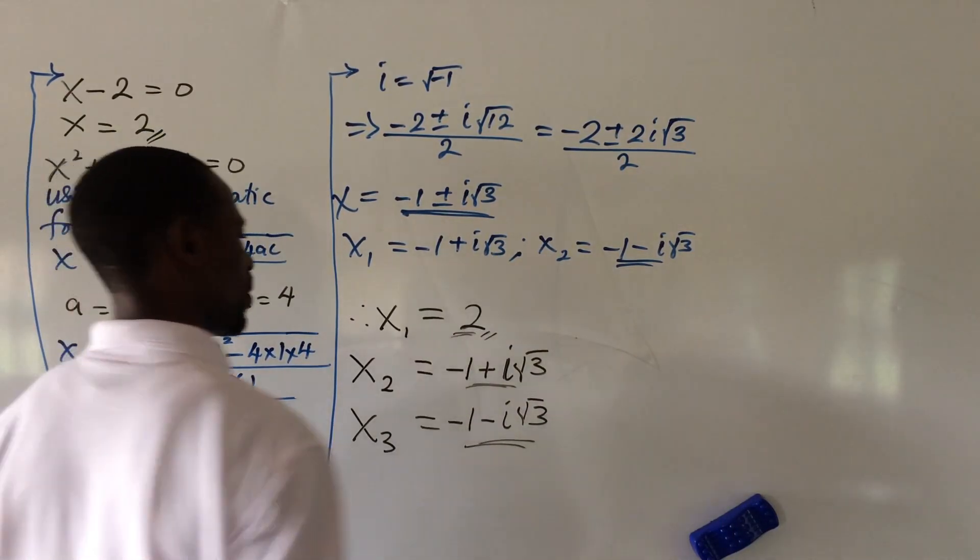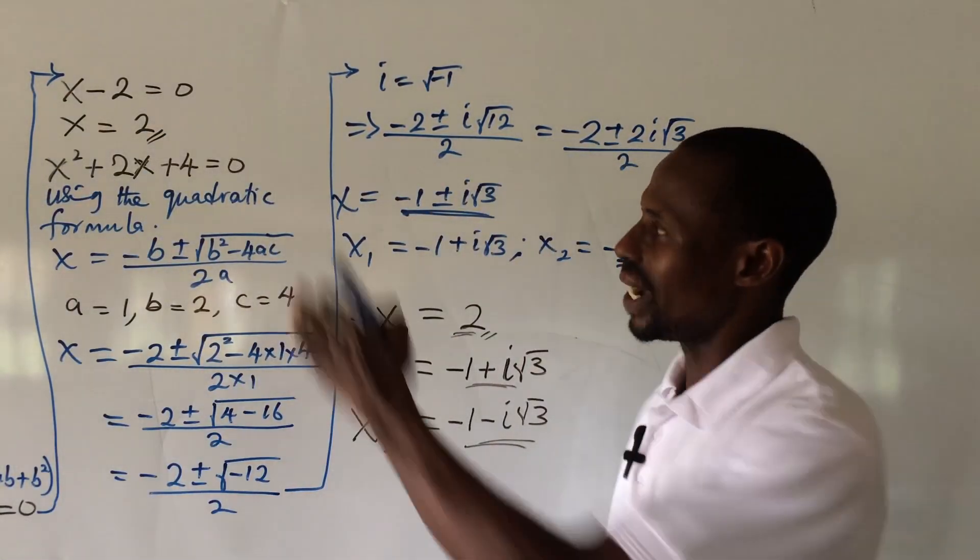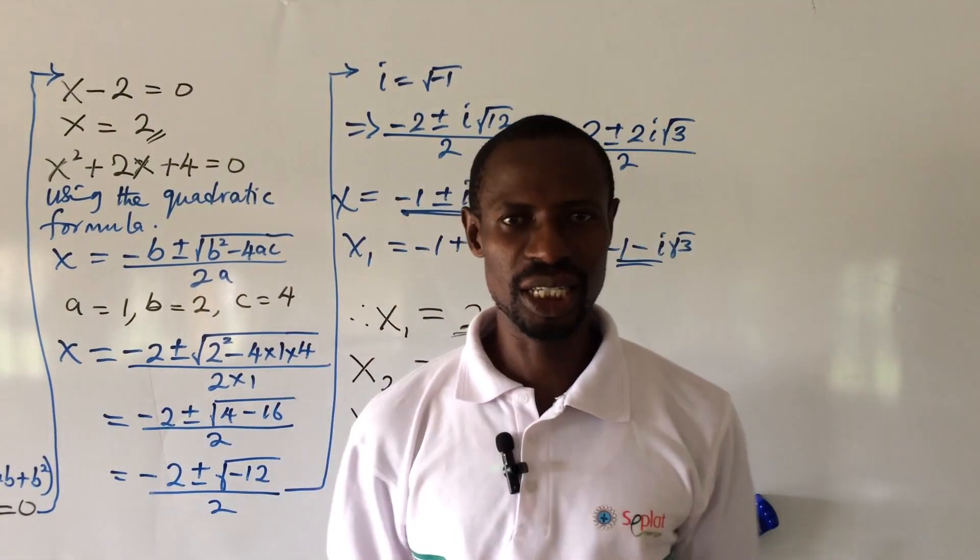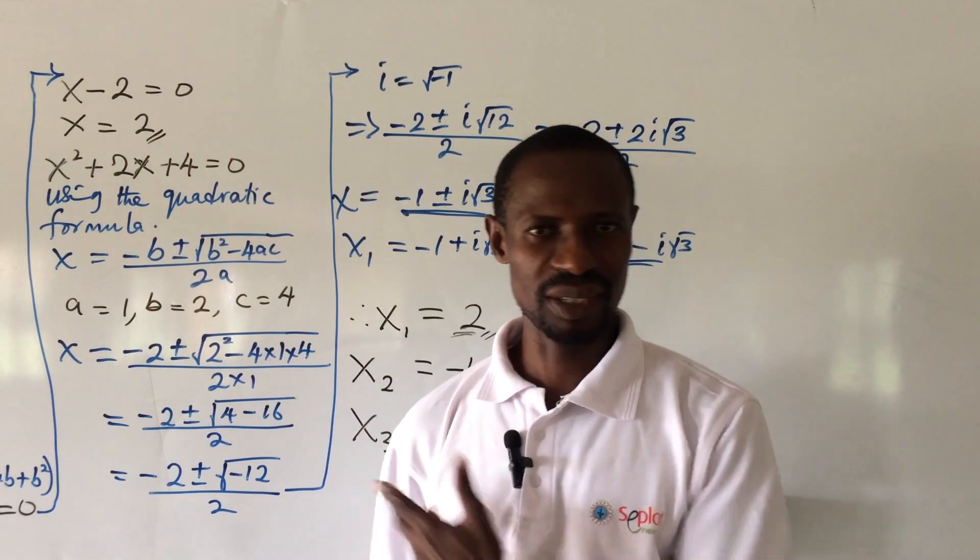And our x3 is equal to minus 1 minus i root 3. So these are the three values that satisfy this exponential equation.